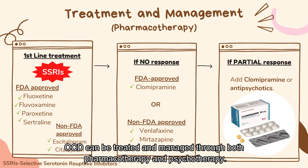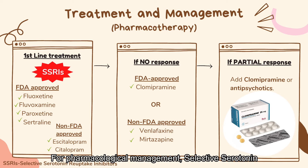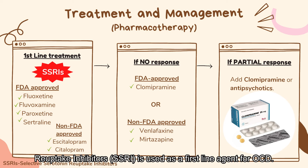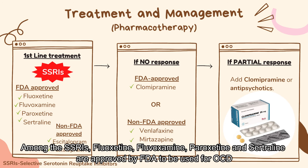OCD can be treated and managed through both pharmacotherapy and psychotherapy. For pharmacological management, selective serotonin reuptake inhibitors, SSRI, is used as a first-line agent for OCD. Among the SSRIs, fluoxetine, paroxetine, and sertraline are approved by the FDA to be used for OCD.